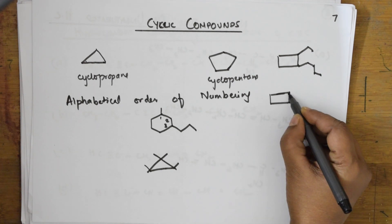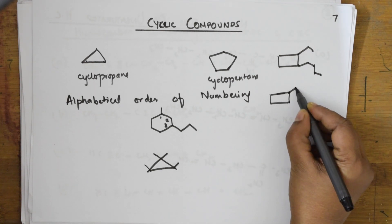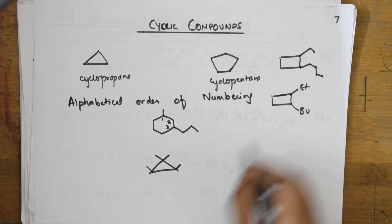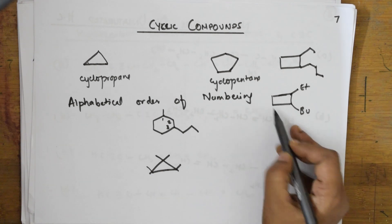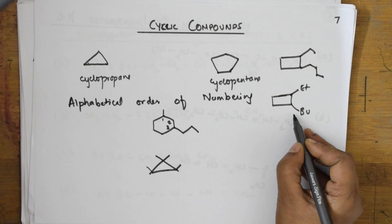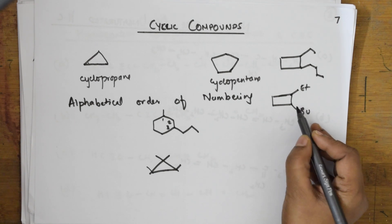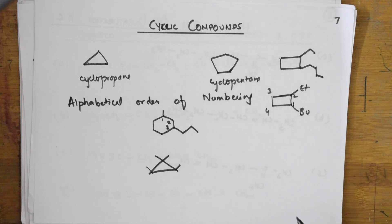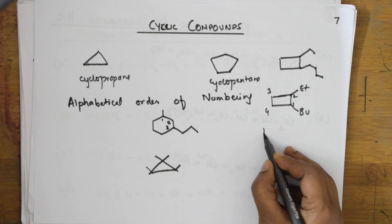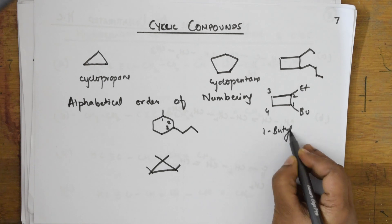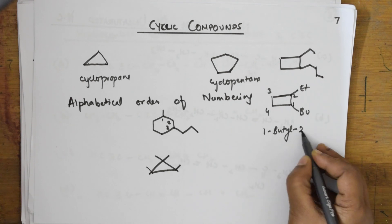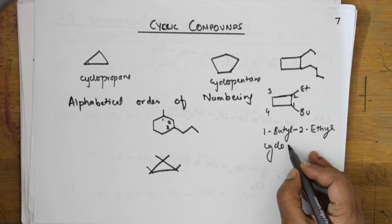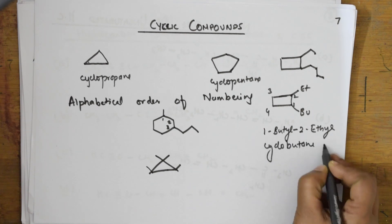The parent chain here is butyl. We start numbering according to alphabetical order — butyl gets the first position, ethyl comes second. So the name becomes 1-butyl-2-ethylcyclobutane. The substituents are named and numbered based on alphabetical priority.